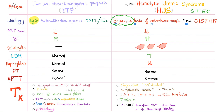Treatment for ITP: if there are no symptoms, no treatment. Steroids can help. IVIG is an option. Platelet transfusion plus IV steroids plus IVIG if it's really severe. Rituximab, eltrombopag, and romiplostim if steroids and IVIG failed. Splenectomy is the last resort.